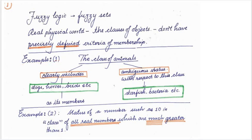This example is about the class of animals. If you think of the class of animals, then if I ask is dog a member of that class, then answer will be clear cut yes. Horses, birds, they are clearly included in this class of animals. They all are members of this class.